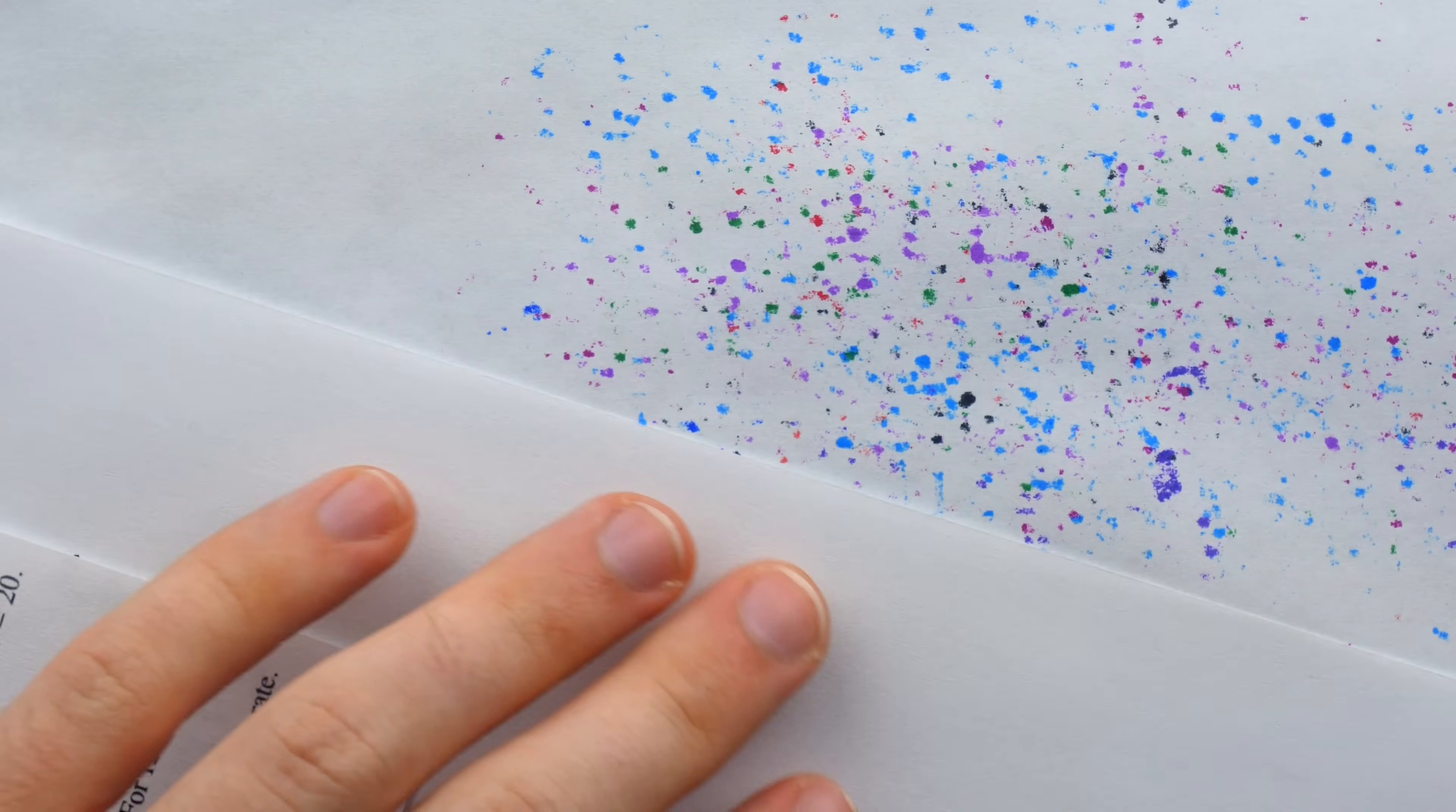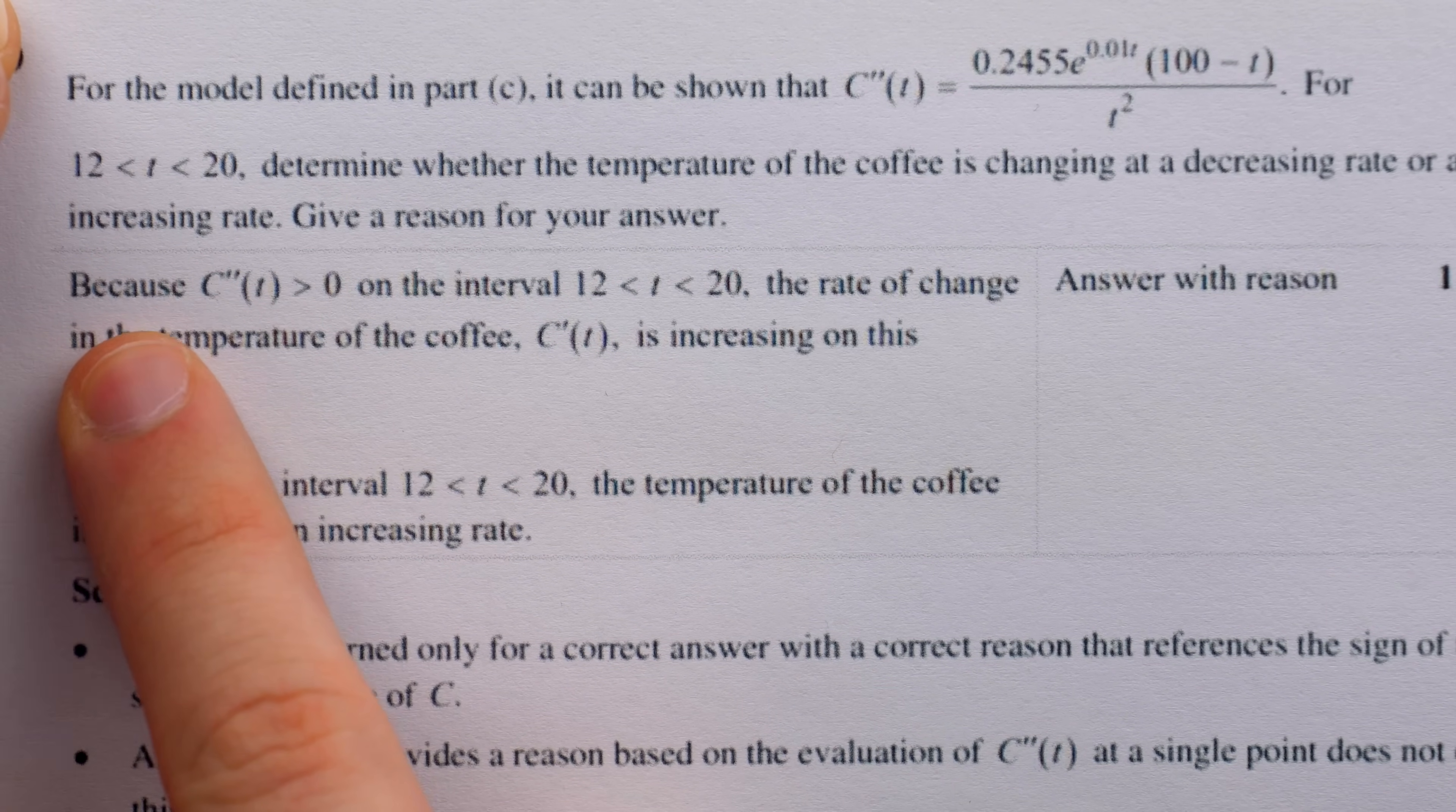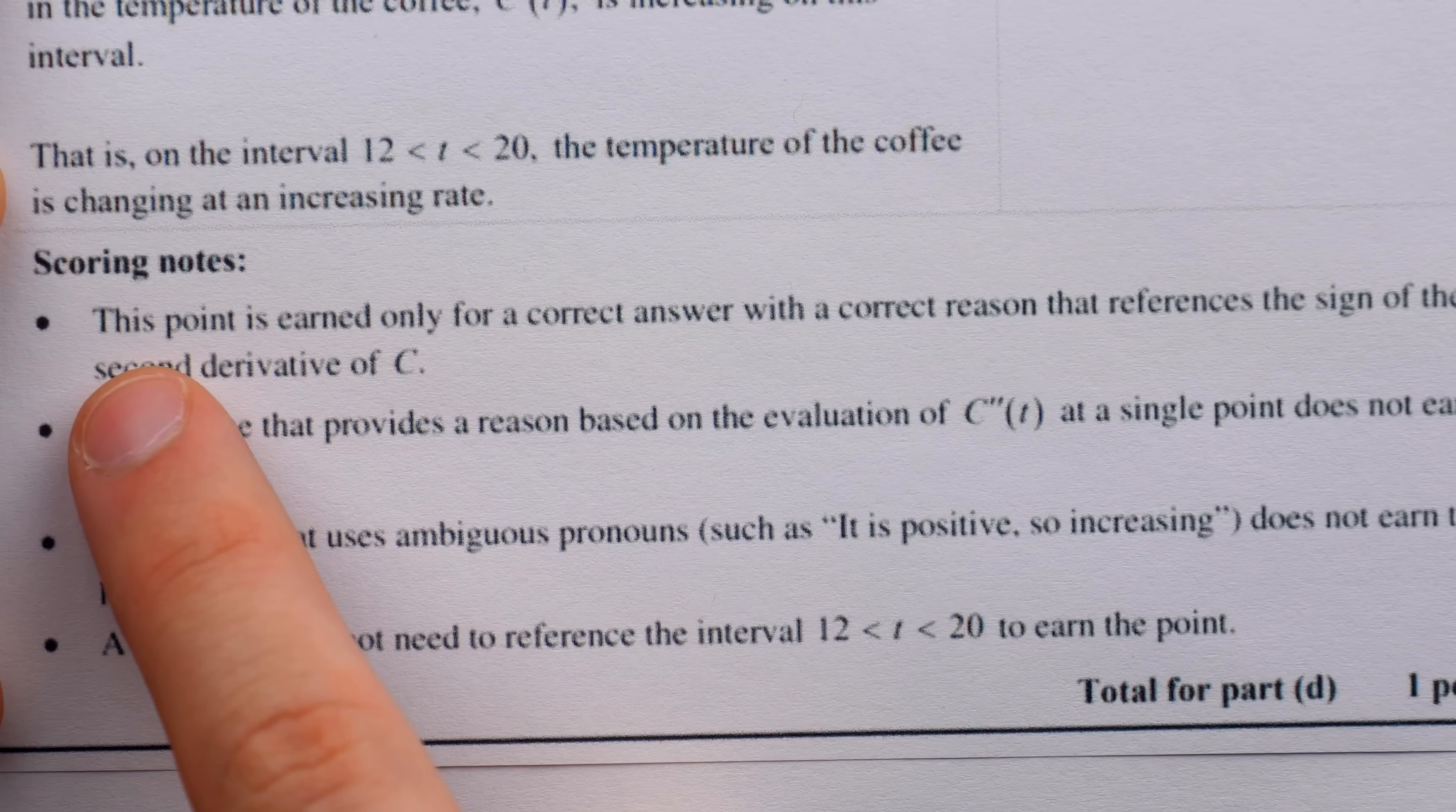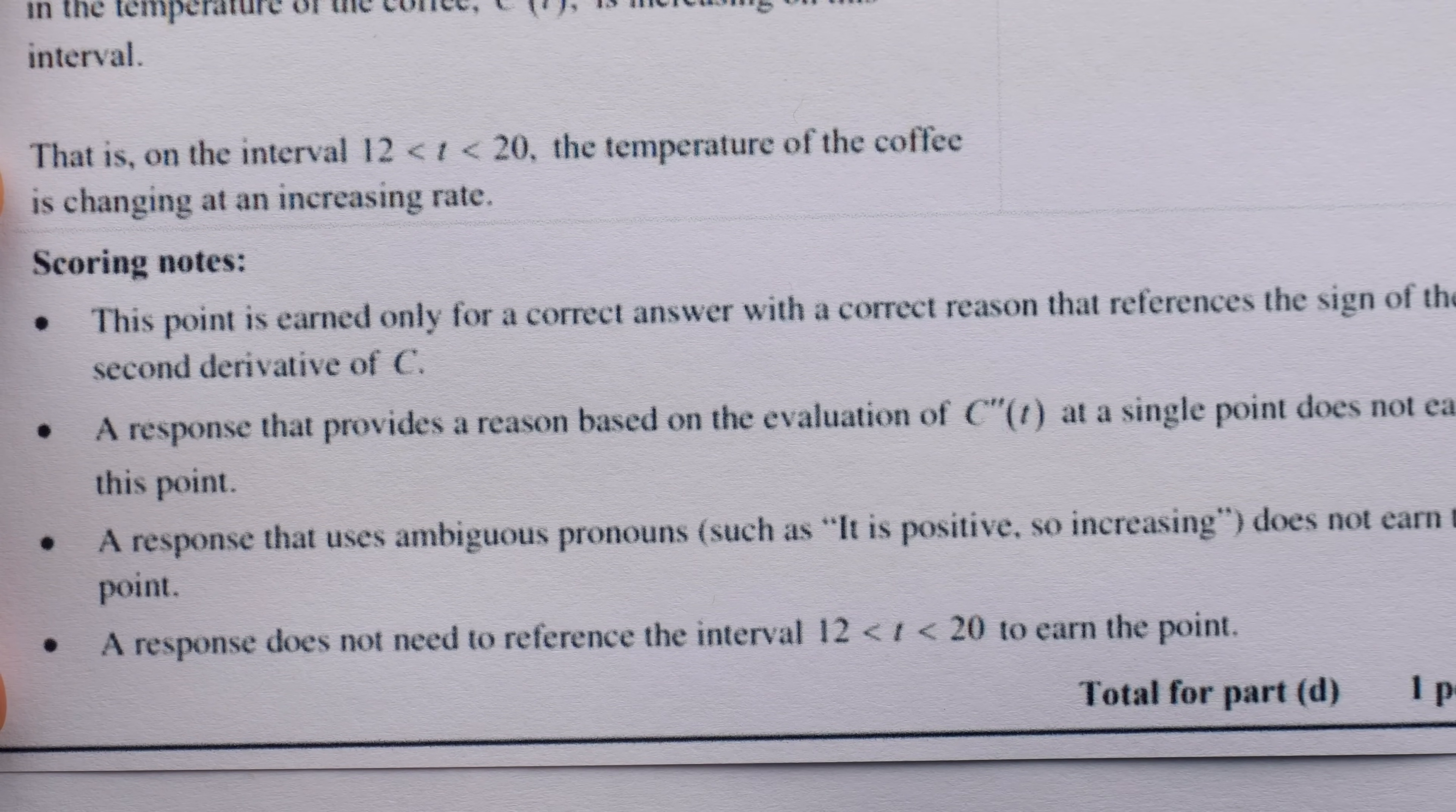Let's take a quick look at the college board's officially released scoring notes to see what someone would have to do to earn the full point for part D. You can see their model solution here. Because the second derivative is positive on the interval from 12 to 20, the rate of change in the temperature of the coffee, C prime, is increasing on this interval. The scoring notes make it clear that the answer must reference the sign of the second derivative of C. That's what's important here because that's what describes if the rate of change of temperature is increasing or decreasing.